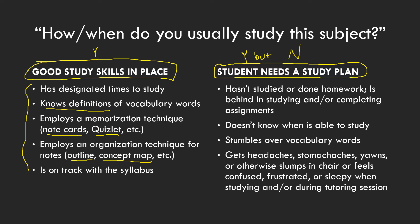A big indicator of good study skills is whether the student is on track with the syllabus or late turning in assignments. If they're keeping up — trying to study, getting assignments turned in — even if they're not understanding everything, that's a really good indicator they have a good study structure.